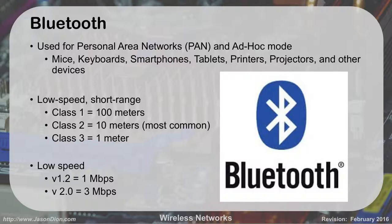The second kind of wireless network is Bluetooth, which we use for personal area networks — things like mice, keyboards, smartphones, tablets, printers, projectors, and other devices for connecting one device to another. Bluetooth is relatively short-range and low-speed. Class 1 goes 100 meters and is the furthest. Class 2 is 10 meters and is the most common, found in most devices. Class 3 is 1 meter. Speeds are 1 to 3 Mbps — not great for data, but fine for mice and keyboards.